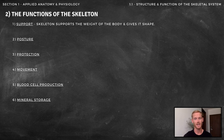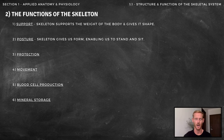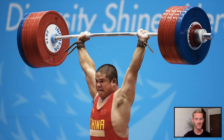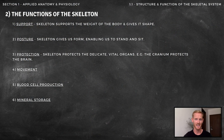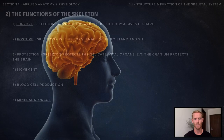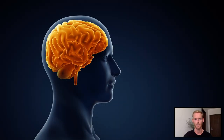The skeleton gives the body shape and supports its weight, giving us posture — allowing us to stand upright. For example, the skeleton provides support for a weightlifter, as it allows them to hold the bar in a static position at the top of the lift. The next function is to protect the delicate vital organs, like the heart and lungs, which are protected by the ribs and sternum, and the brain, which is encased by the cranium. For example, the cranium protects the brain when heading a football.